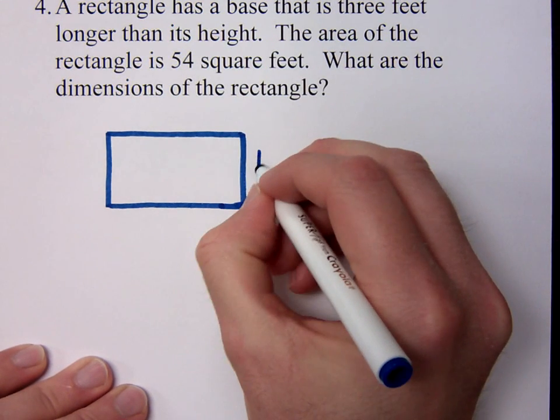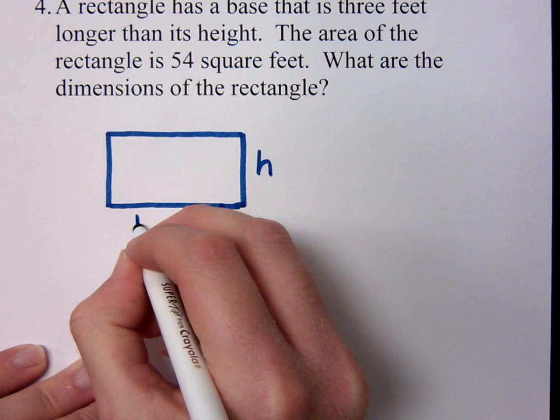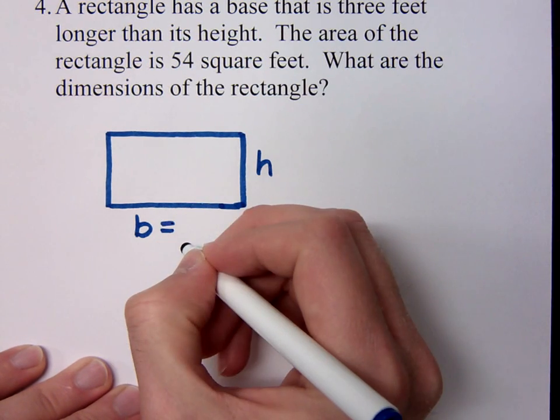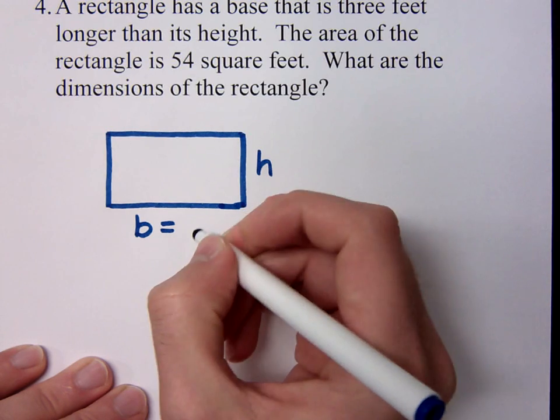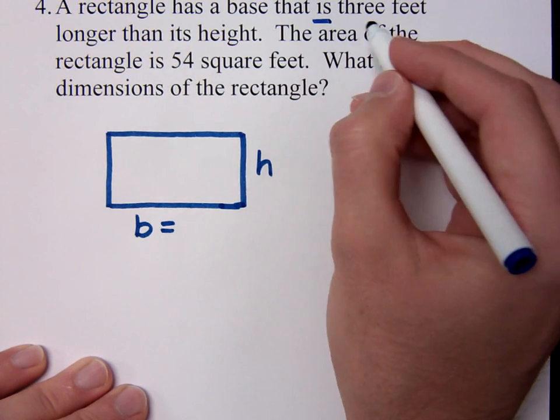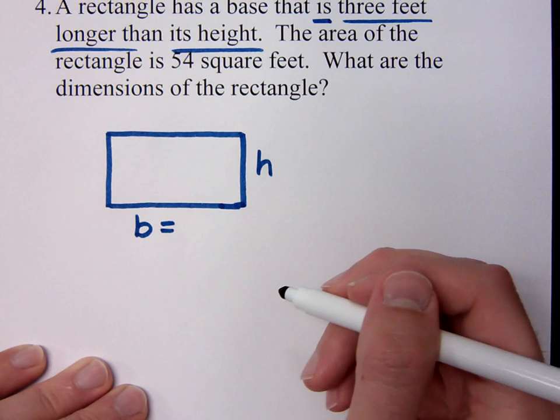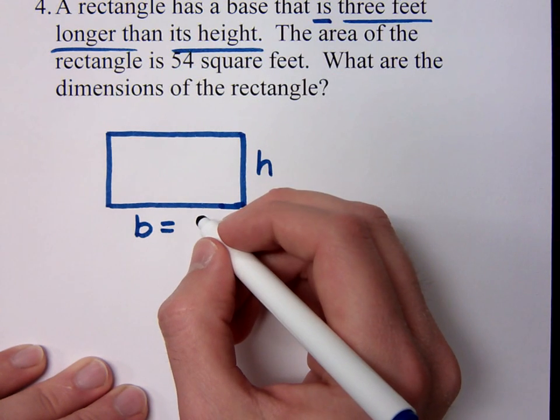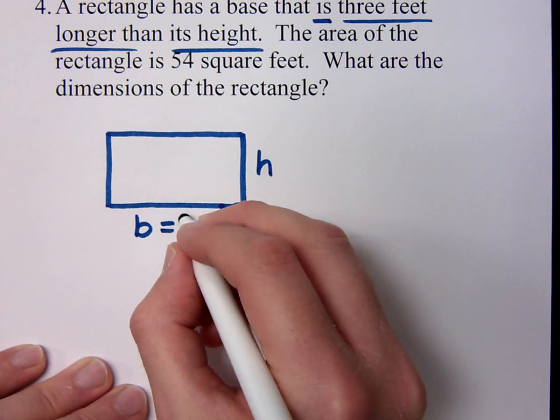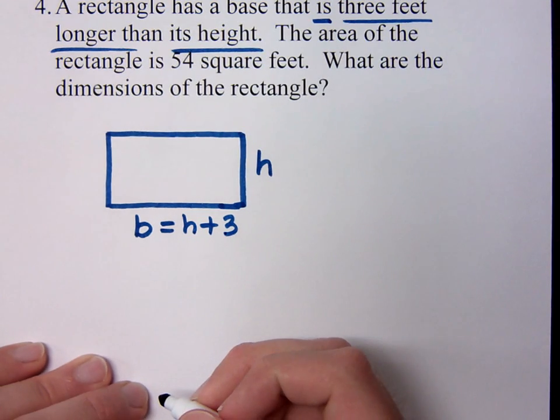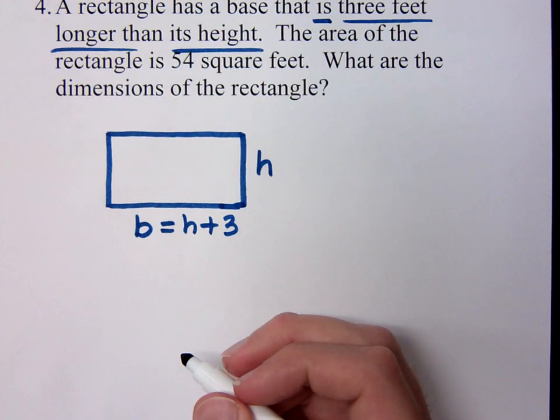Now since we are talking about base and height, I don't need to define my variables as long as I stick to B and H. So a rectangle has a base that's three feet longer than its height. So if this is my height, and this is my base, how is my base related to the height? What does my base equal? It is three feet longer than the height. How do you write that? It's the height plus three. Do you agree? So I have a way to represent each side using the same variable. In this case, H for the height.